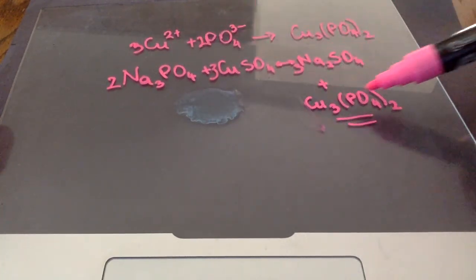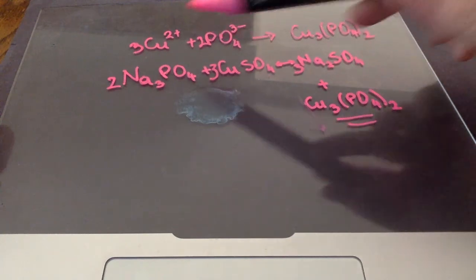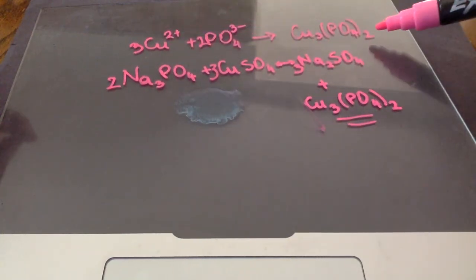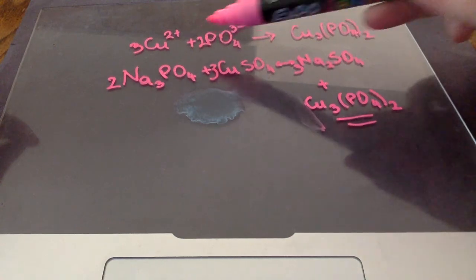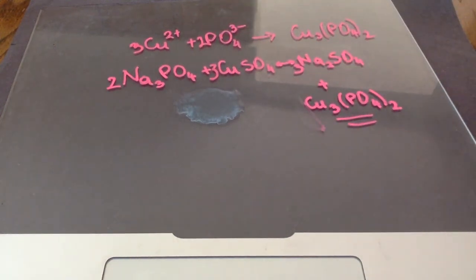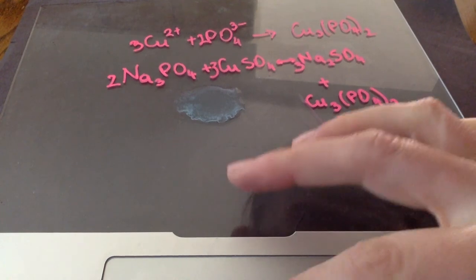Once you write the full equation, then write the net ionic equation that consists only of those ions that give you the precipitate. If you have any questions, let me know, and I will certainly help you. Thank you.